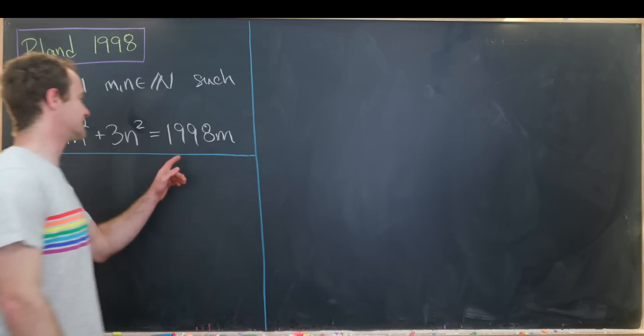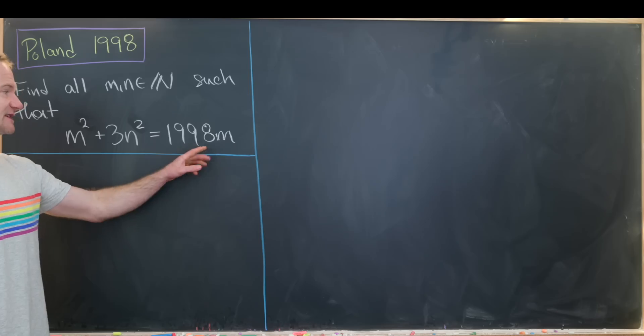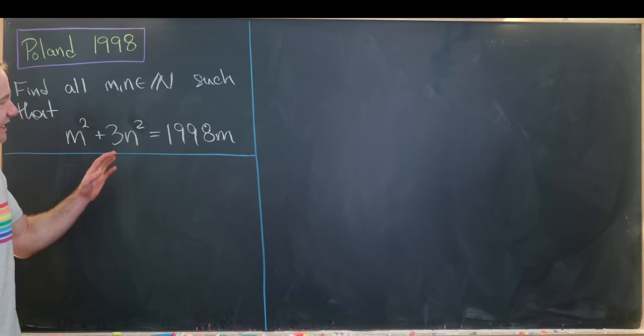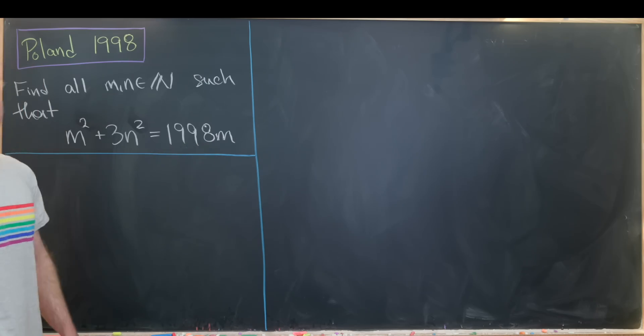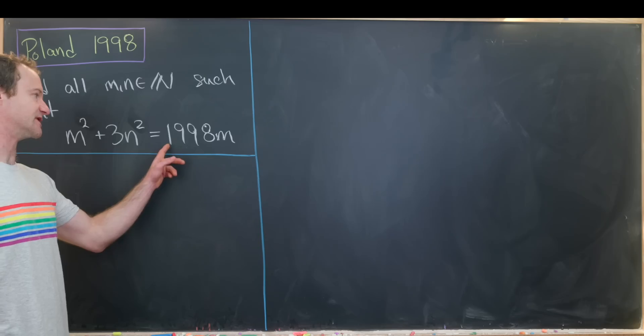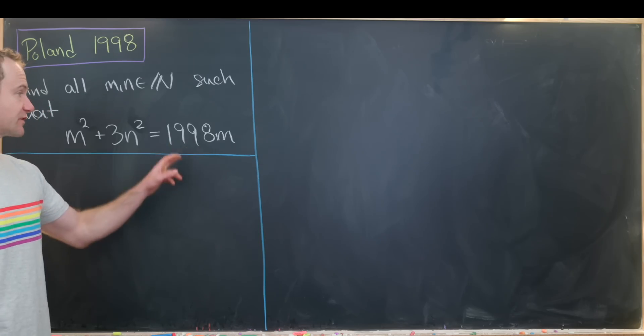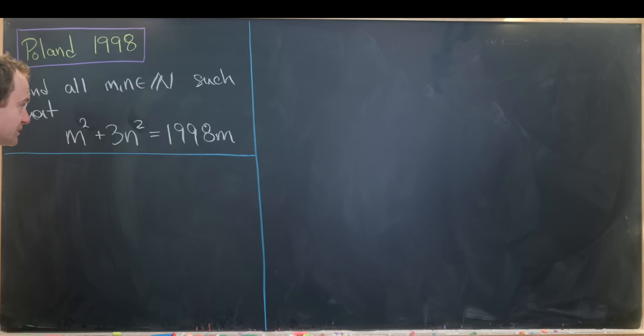The first thing that I'd like to notice is that 1998 is divisible by 3. We can quickly see that because 1 plus 9 plus 9 plus 8 is a multiple of 3. Really all that we need to notice is that 1 plus 8 is a multiple of 3 because 9 plus 9 is a multiple of 3. So let's see how that can help us.